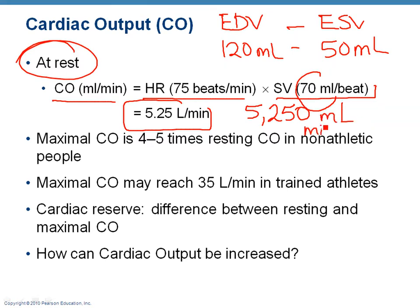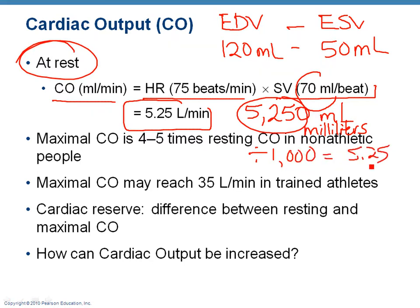ML stands for milliliters. A milliliter is one one-thousandth of a liter, so there are one thousand milliliters in a liter. If you want to express this as liters, you take this number and divide by 1,000, and that gives us 5.25 liters per minute. Cardiac output is typically given in either milliliters per minute or liters per minute.